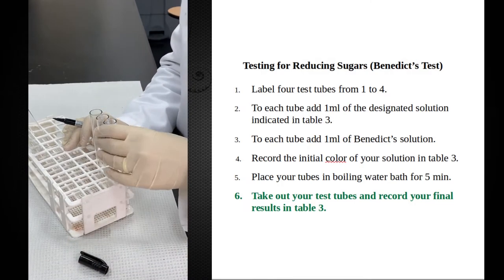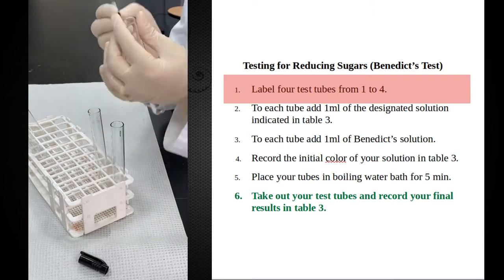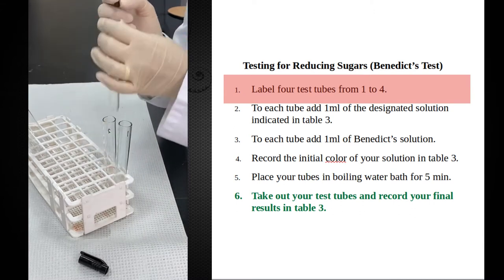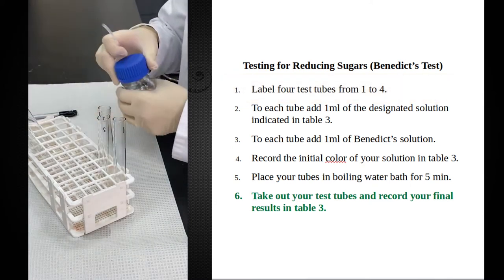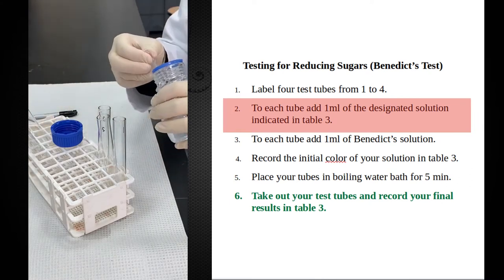Now we are going to perform Benedict's test. Benedict's test is a test for reducing sugar. I will use three test tubes. The first test tube is going to be my negative control and I will add in it one ml of distilled water.